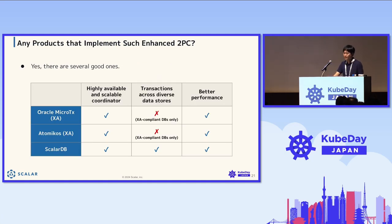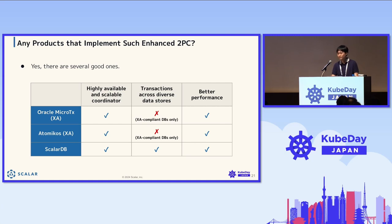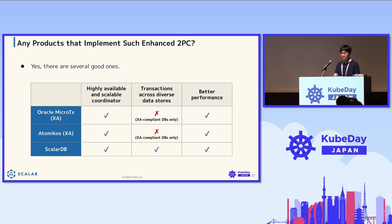This table compares recent enhanced 2PC products. Oracle Micro TX is based on XA and adapts multi-level transaction management, meaning it can only be used with databases that support XA. ScaleDB adapts single-level transaction management, allowing it to support a wide variety of databases including NoSQL. All of these enhanced 2PC products support redundancy and scaling for coordinators, enabling high availability and scalability, and implement many optimizations for better performance.